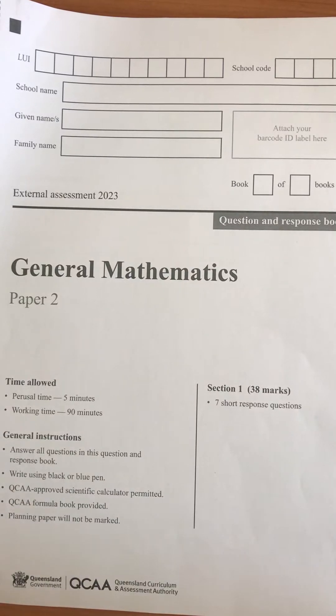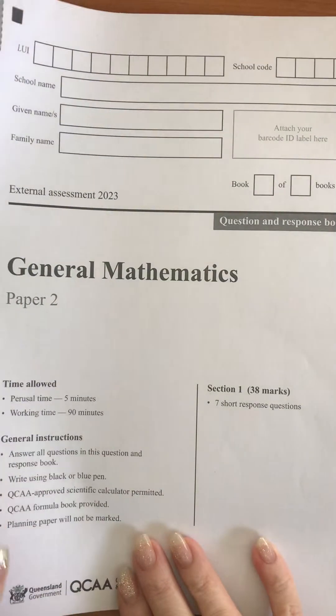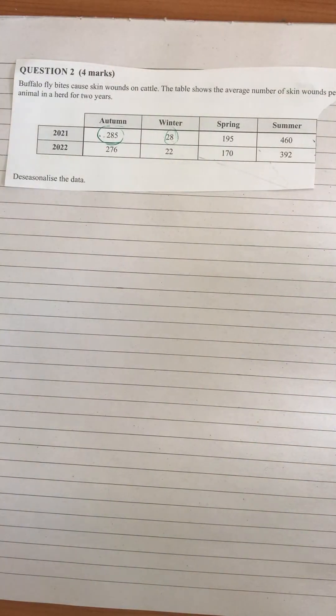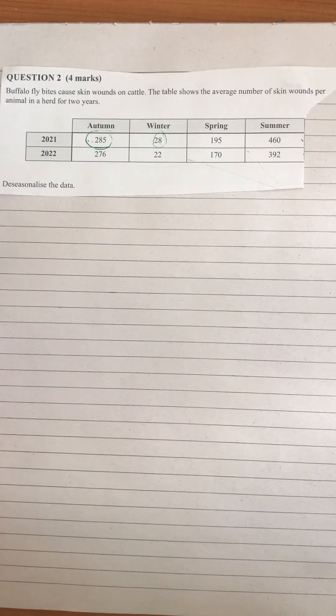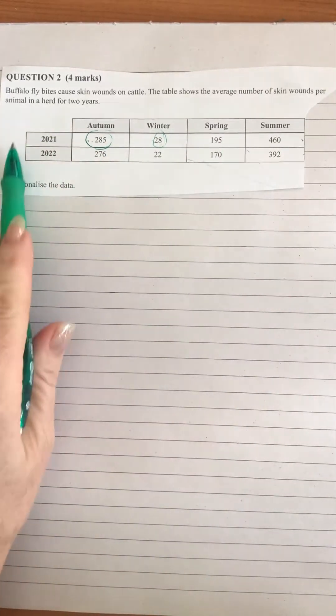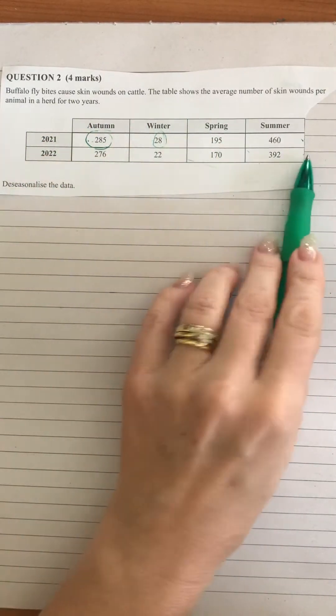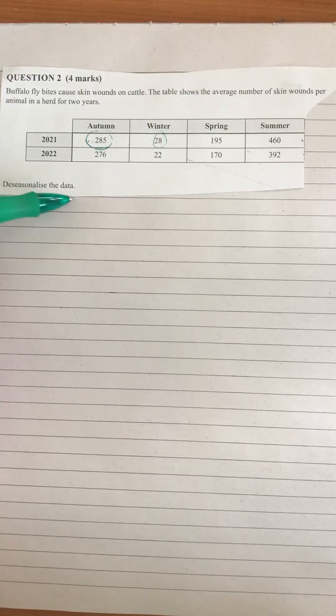I'm having a look at the general maths paper from 2023, paper two. In this video I'm looking at question two. I have another video that goes through question one and we'll be working through the paper if you want to check out the other questions. Question number two is a seasonal index question. We've been given some data for two years, the seasons, and we need to go through and de-seasonalize the data.